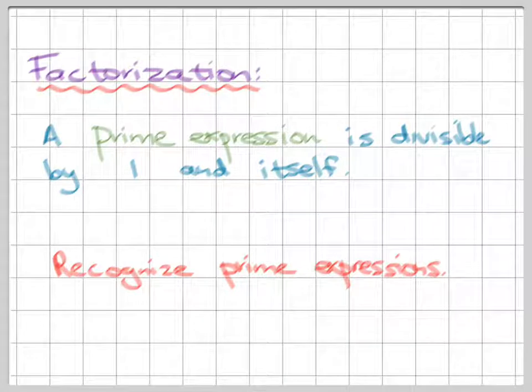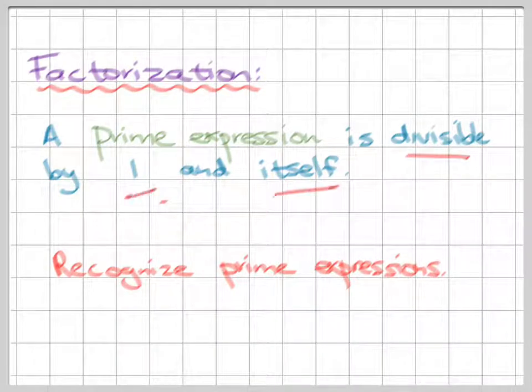So let us look at prime expressions. Now remember prime numbers, we know what those are from junior school. Those are numbers which only have one and themselves as their factors. So a prime expression is the same. It's divisible by one and itself.